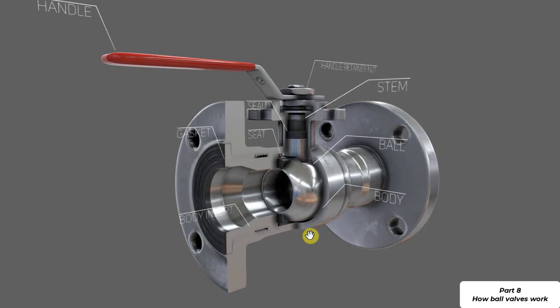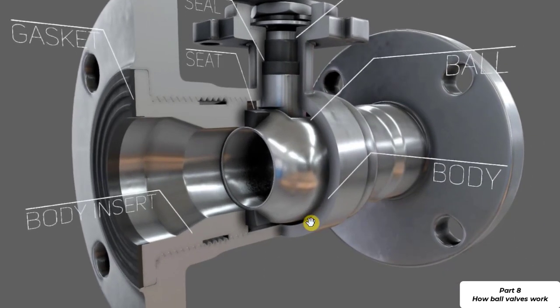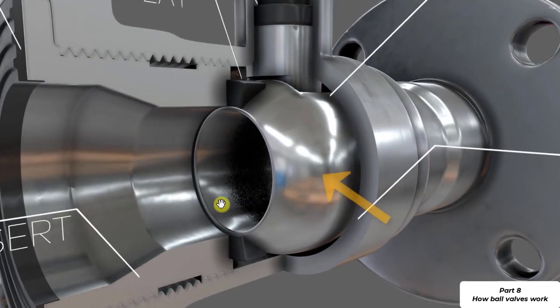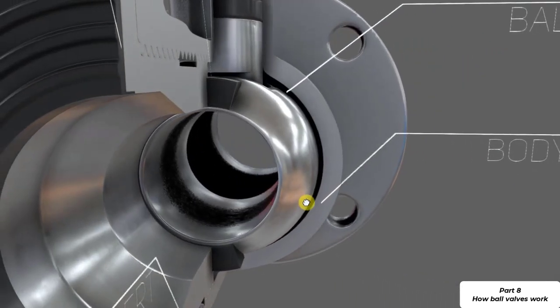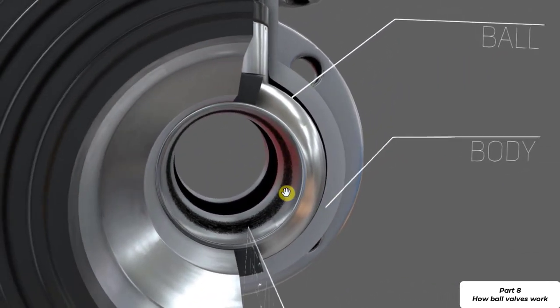So here we have the ball valve with some of the main components labeled. The ball valve gets its name from the type of disk it employs which is the ball. We can see now that the ball valve is in the fully open position. We can see directly through the valve.